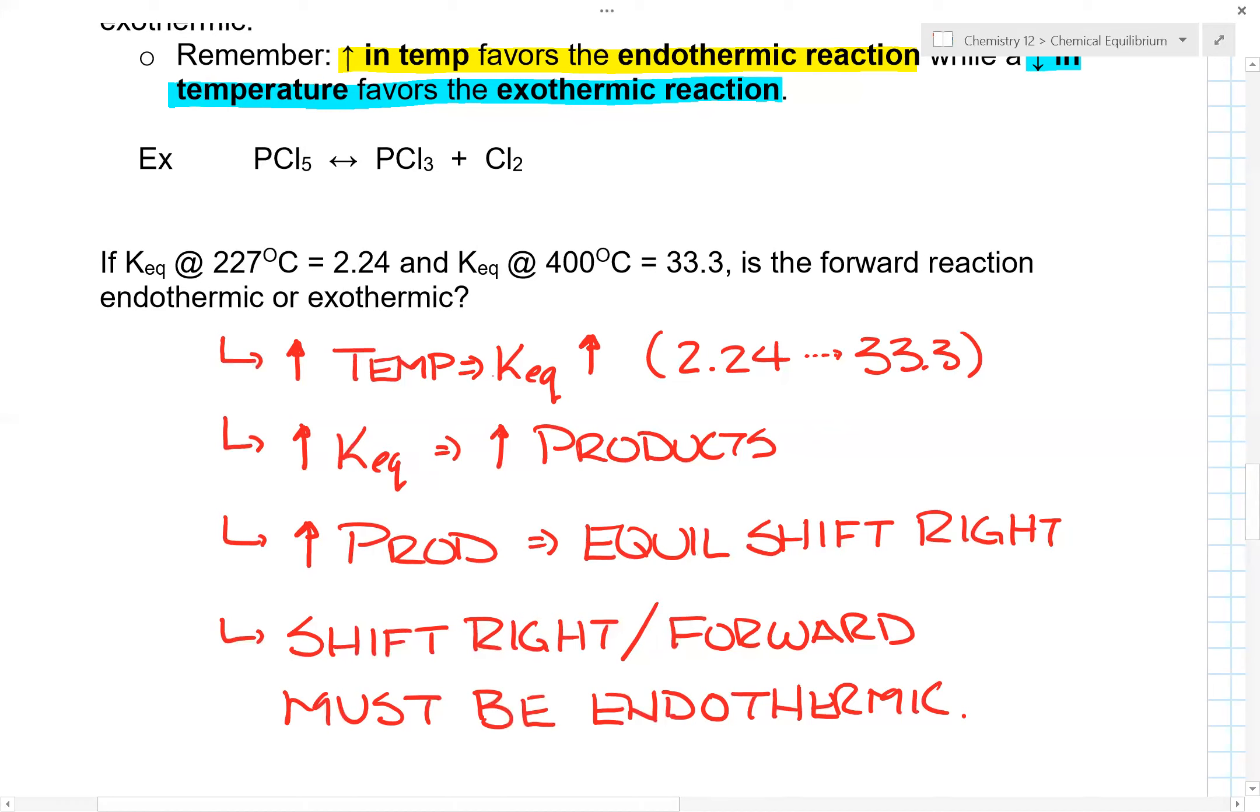When you increase the Keq, that means you must have had more products at equilibrium. For you to have more products, that means the equilibrium must have shifted to the right when you change the temperature. So shifting to the right, that means the forward reaction must be endothermic. And that is the thought process when you're breaking it down.